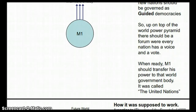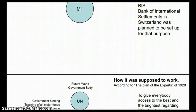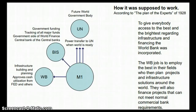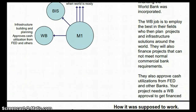When ready, M1 should transfer power to that world government body — the United Nations. All these new and old independent nations needed financing, and to supply and track all major fund movements, you need a central bank to all central banks. That was the Bank of International Settlements, and Switzerland was planned to be set up for that purpose. The World Bank was incorporated to give everybody access to the best and brightest regarding infrastructure and financing, employing experts to plan projects and infrastructure solutions around the world, while also approving cash utilizations from the Fed and other banks.